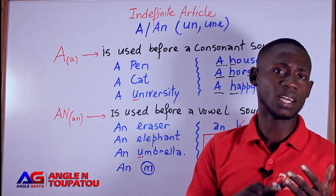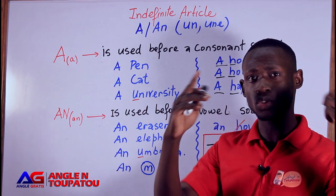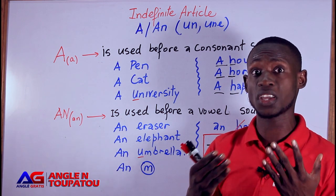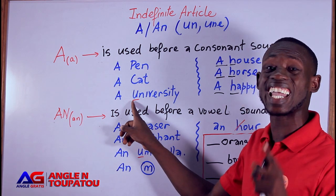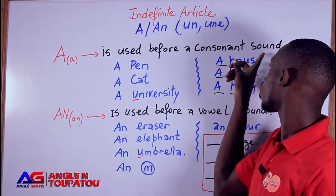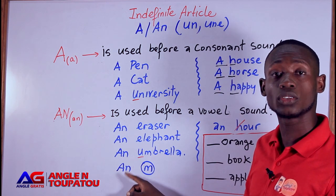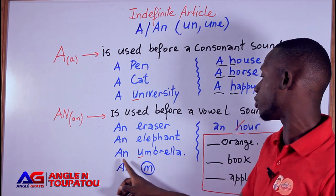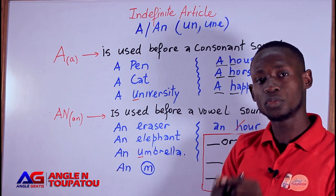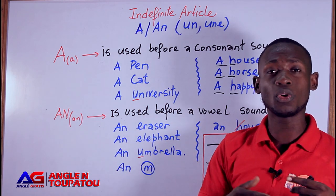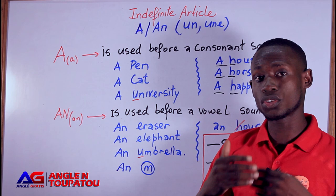In the next video I will talk about how to use the indefinite article, the zero article, and 'the' — and how to use them in sentences. In this case, 'university' gives a 'Y' sound — a consonant sound. So I say 'a university'. Now let's understand the difference between the sound 'yoo' with the letter A, and the vowel sound 'u'.